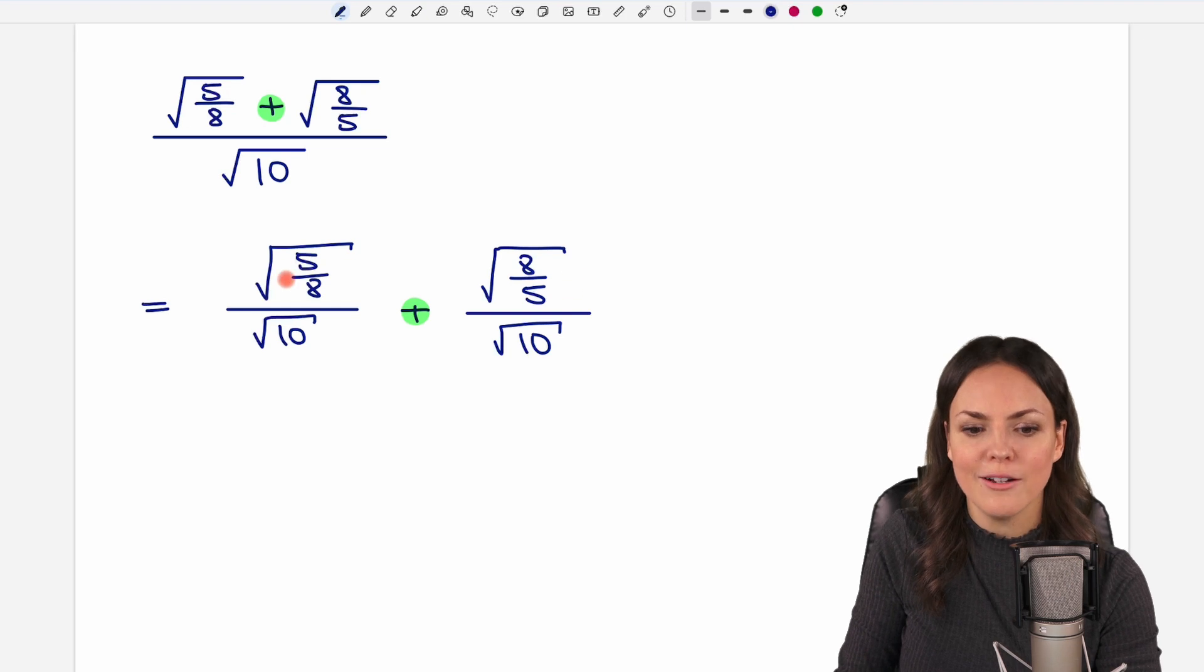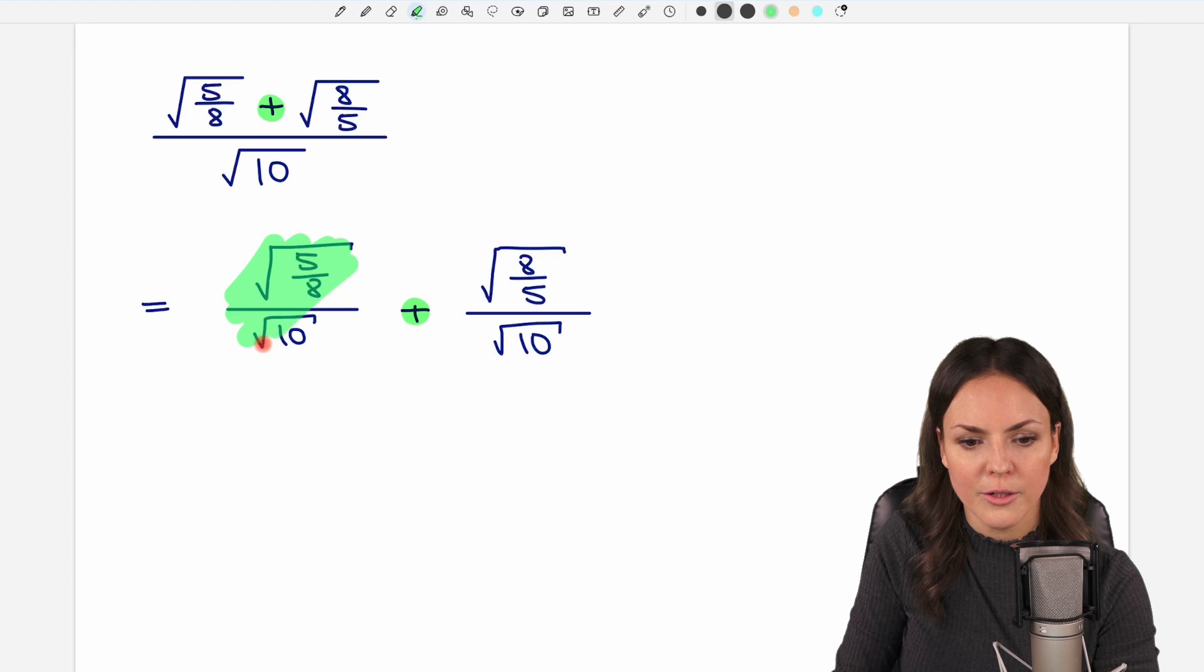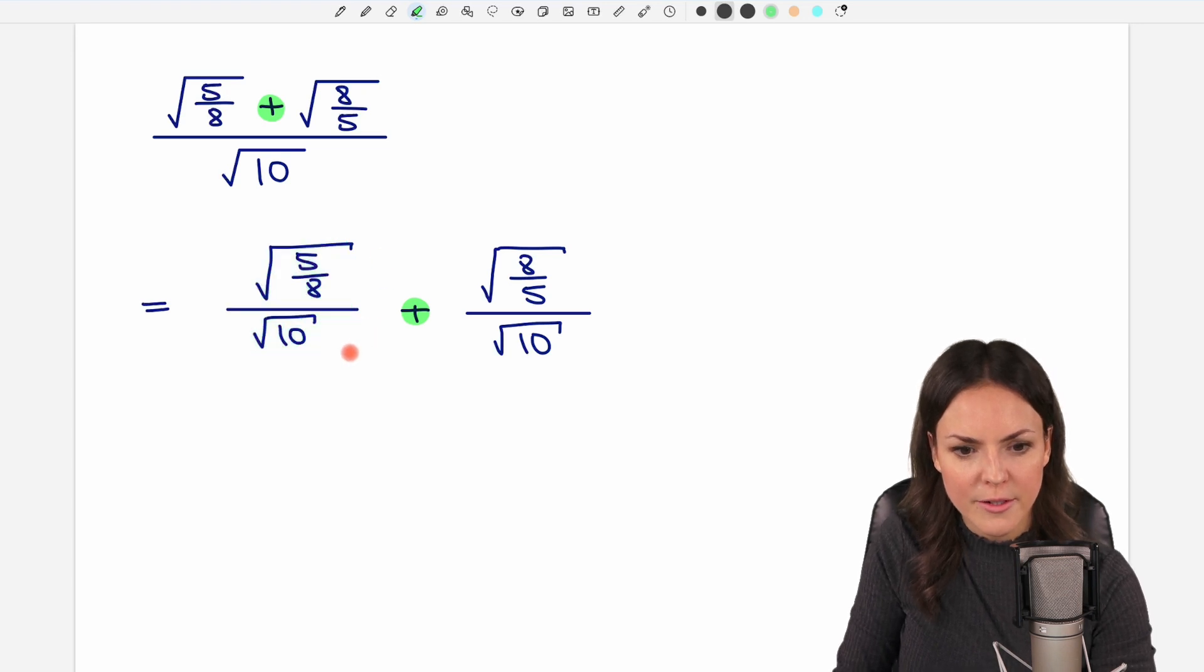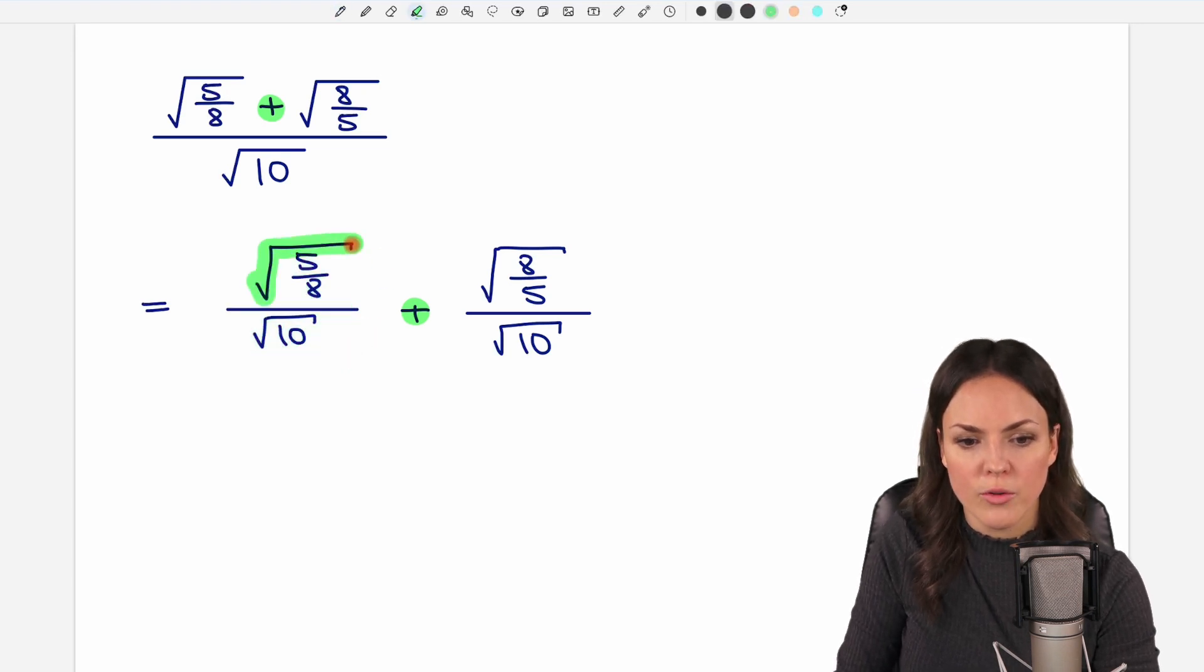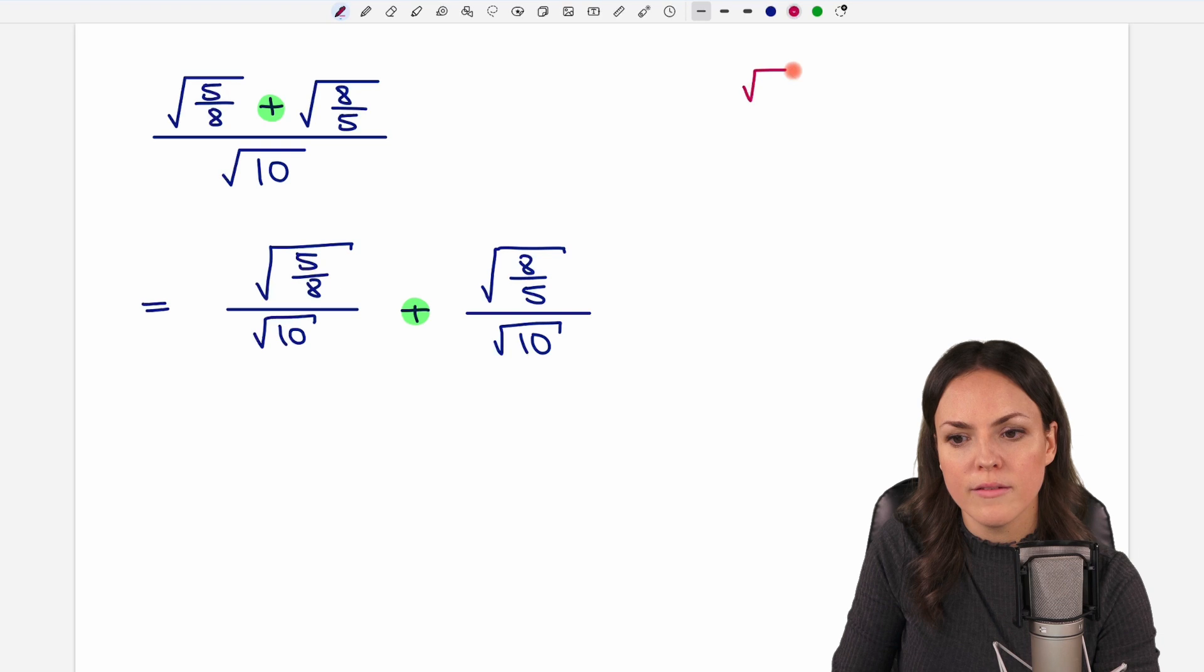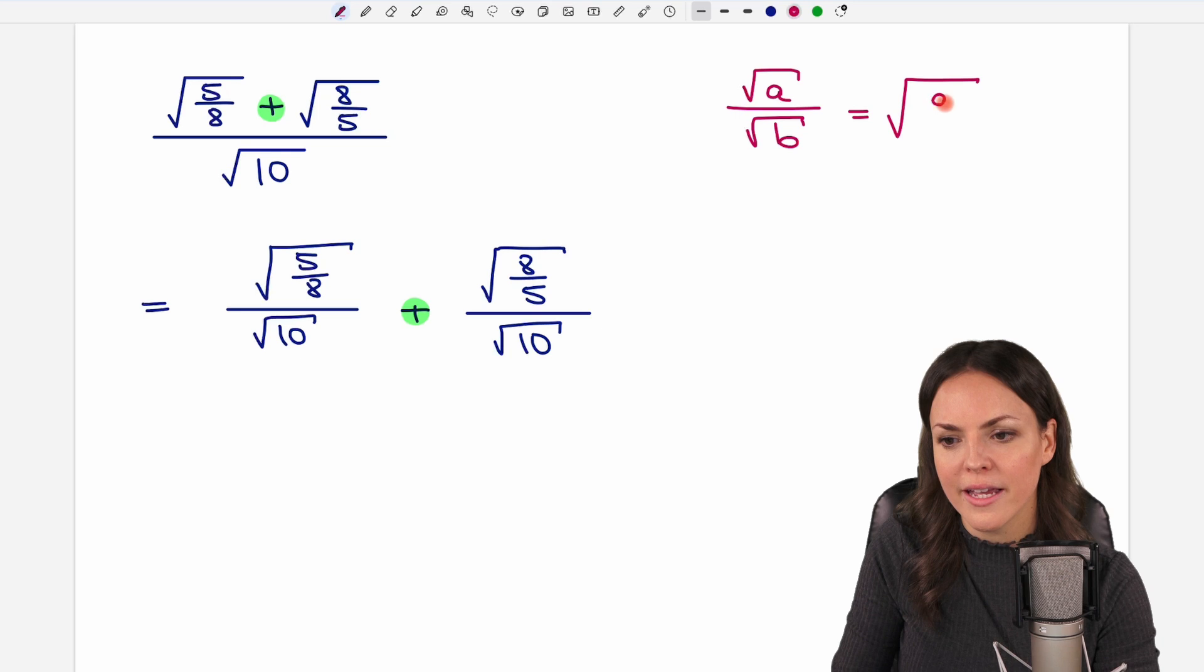Now I have two separate fractions. I first take a look at this part here. We have a square root divided by another square root and there is a rule that says if you want to divide the square root of a by the square root of b, you can do that by writing it as one big square root and divide a by b. So let's do this.